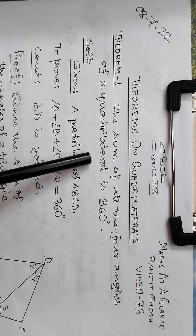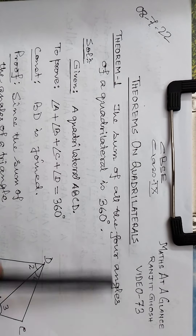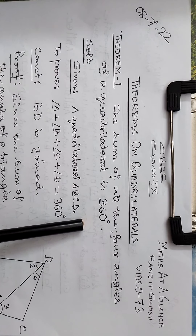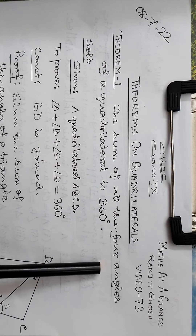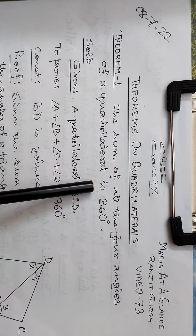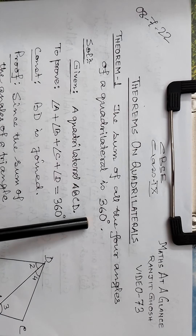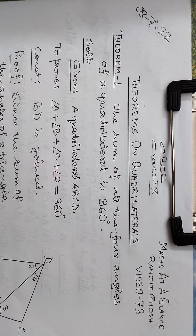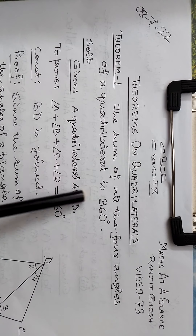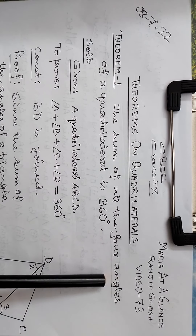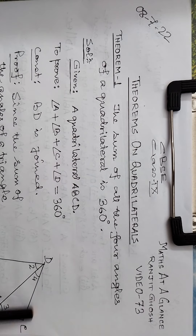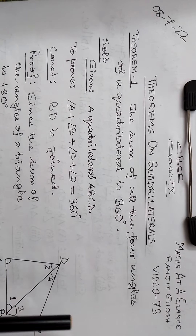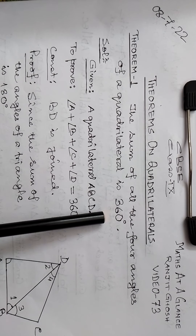The sum of all the four angles of a quadrilateral is 360 degrees. This is the proof.